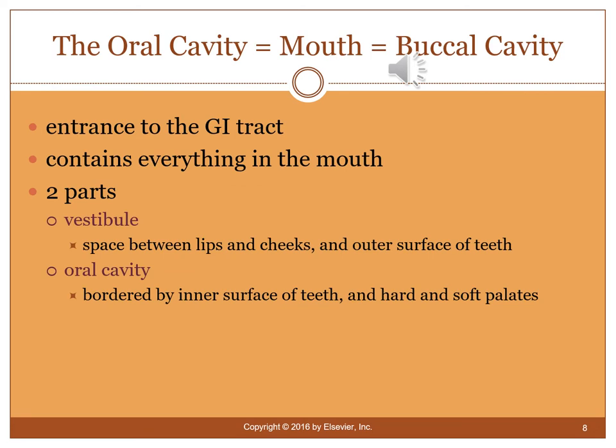The oral cavity is also known as the buccal cavity. It contains everything in the mouth and has two parts: the vestibule, which is the space between the lips, cheeks, and outer surfaces of the teeth; and the oral cavity proper, which is bordered by the inner surfaces of the teeth and the hard and soft palate. The vestibule is where you can feel the outer surfaces of the cheeks and teeth with your tongue.